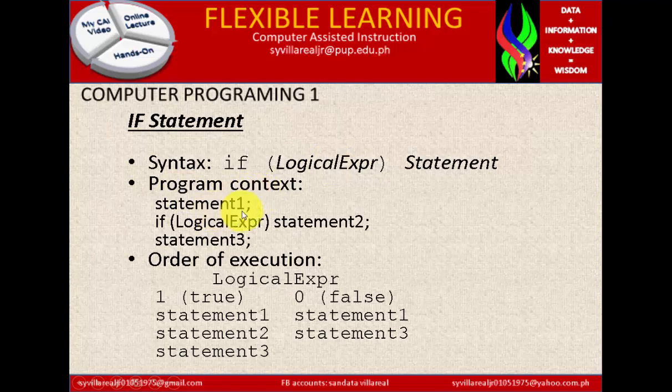Now we have program context statement 1, if logical expression statement 2, then statement 3. Next we have the order of execution. Logical expression must be answerable by true or false. Under statement 1 up to 3. The same process with false.